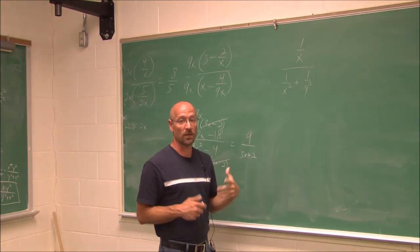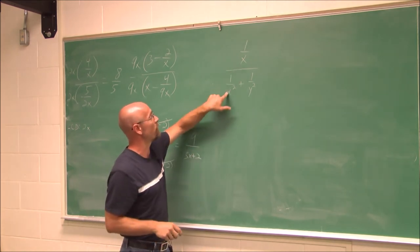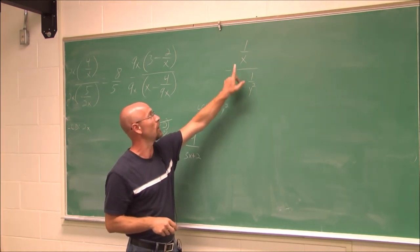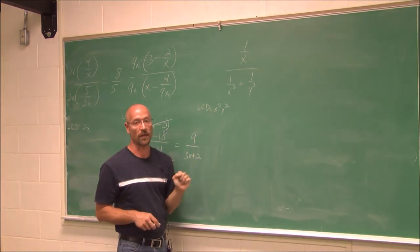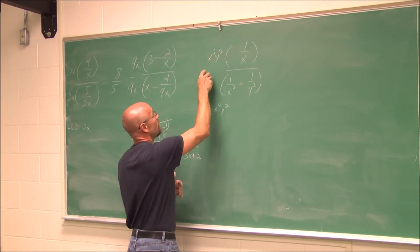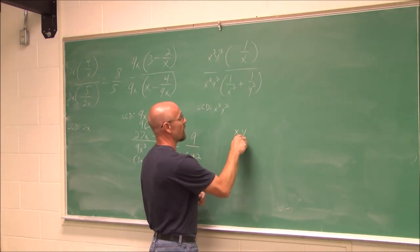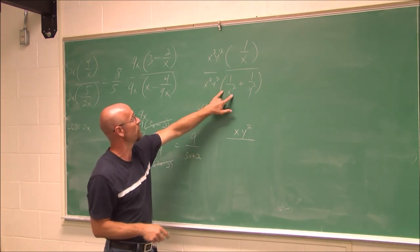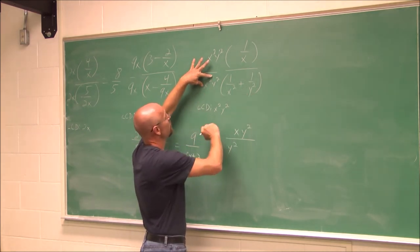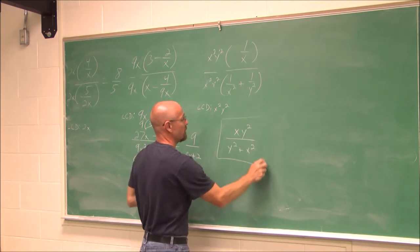Now for the third example — this one was long using method 1, so I prefer method 2. The LCD of all fractions involved is x²y², since this term has two factors of x, that term has two factors of y, and the other has one factor of x. Multiplying all terms by x²y²: for the numerator term (1/x), one x cancels leaving xy²; for the denominator — first term (1/x²), the x²'s cancel leaving y²; second term (1/y²), the y²'s cancel leaving x². The simplified solution is xy² over (y² plus x²).